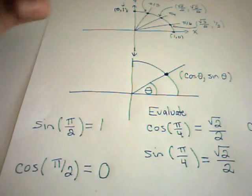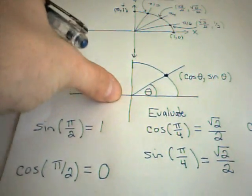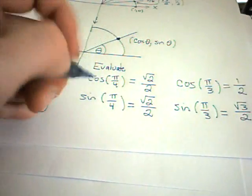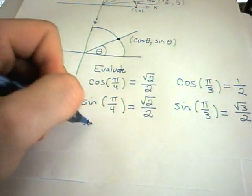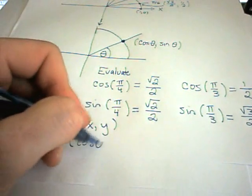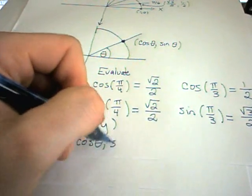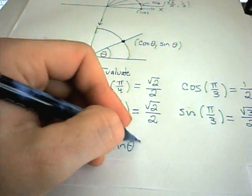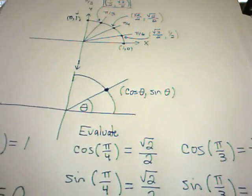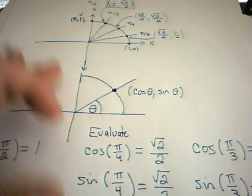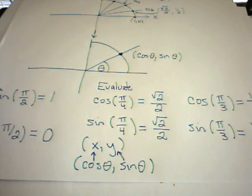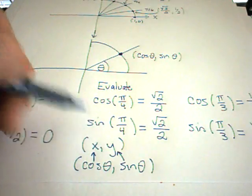You can think about angles on the circle and then values that correspond to those angles. A little trick to help keep them straight: x comes before y in the alphabet, and likewise c comes before s in the alphabet. So cosine represents the x-coordinate and sine represents the y-coordinate. You've got some values to memorize, and then it's just remembering that cosine denotes x and sine denotes y.